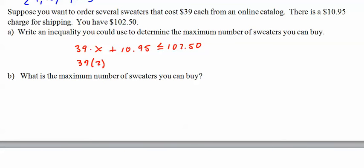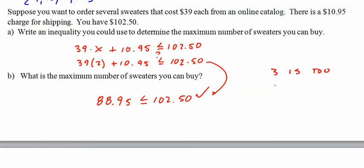I get that we can buy at most 2. So let's check. 39 times 2 plus 10.95. Is that less than or equal to 102.50? So I get 88.95. And yes, that is less than 102.50. The question is, could we have gotten 3? So I really would have to check. And the answer is no. 39 times 3 is 117. 3 is too many. And I am a huge believer in writing out what you do, why you do it.